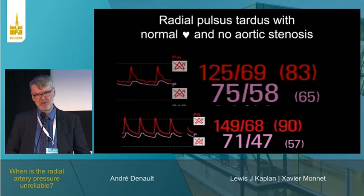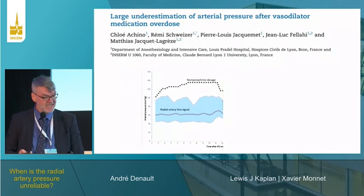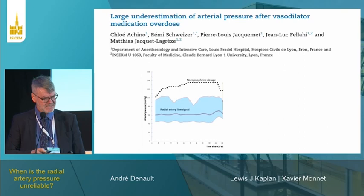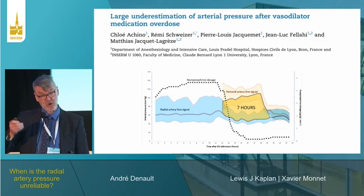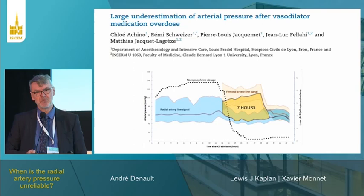What are the implications? A patient arrived in the emergency room with significant vasodilator drug intoxication, on high-dose noradrenaline. The clinician placed a femoral artery line, and you can see the huge gradient — lasting about 7 hours — and the amount of norepinephrine that just goes down when you switch to femoral. The more unstable your patient is in the ICU, the less reliable the radial artery is.